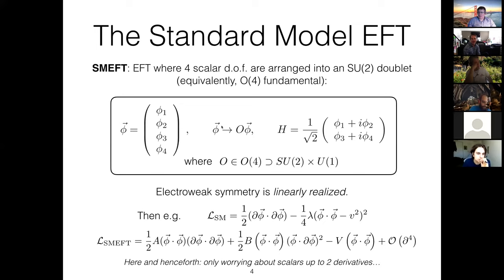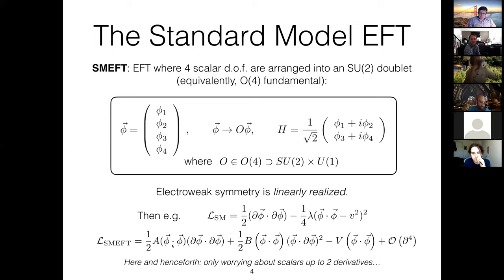If you construct an EFT where O(4) acts linearly on the degrees of freedom, we say the symmetry is linearly realized. The standard model consists of the two marginal and relevant terms you can construct out of the field phi. In the bosonic sector, focusing on two-derivative terms, you can dress up the kinetic term with an arbitrary function of phi-dot-phi. You can also do a different O(4) contraction between phi and its derivative, square it to make a global symmetry invariant, and dress that up with an arbitrary function of the length of phi. Those are the two possible classes of two-derivative terms.